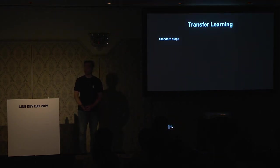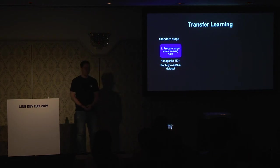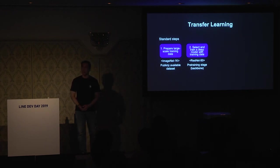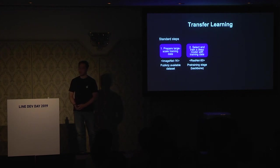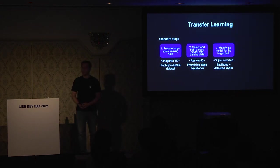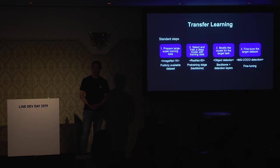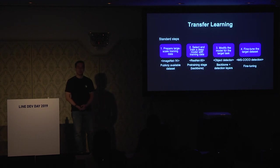The standard framework for transfer learning is as follows. First, we prepare a large-scale training dataset — usually ImageNet, which has more than 1 million images and 1,000 classes. Then we select a deep model to fit our purpose: it can be a lightweight model for mobile devices or a heavy deep model for GPU machines. The selected model is trained on the large-scale dataset in the pre-training step. After that, the pre-trained model is modified for the target task — usually the last layers are changed — and finally the full model is fine-tuned with target-specific data.